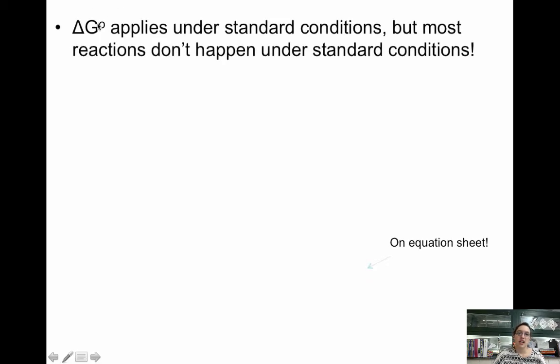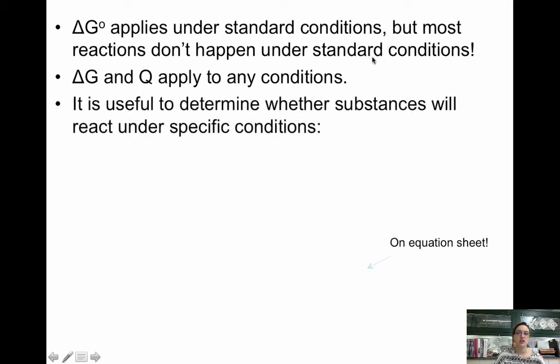Remember that delta G not means that it applies under standard conditions. However, most reactions don't happen under standard conditions, so instead we just use delta G and Q. Q is when we calculate the equilibrium constant at any condition. It's useful to determine whether something will react under specific conditions, whether reactants or products will be favored.